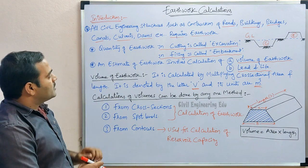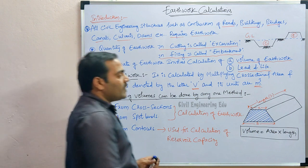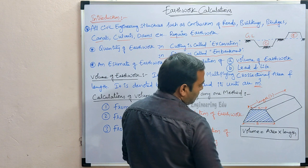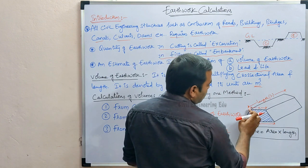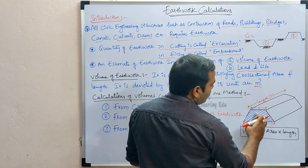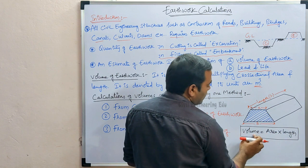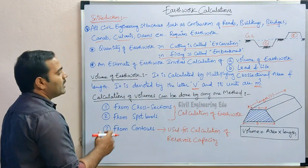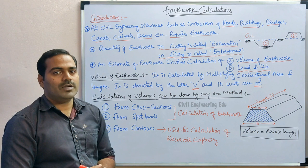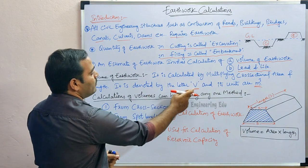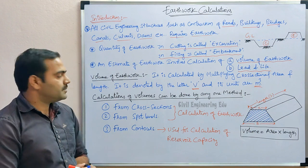Volume of earthwork is calculated by multiplying the cross-sectional area and the length. If you see this figure, this is a trapezoidal shape with a given length. We find the area of the hatched portion and multiply it by the length. The formula is: Volume = Area × Length. Volume is denoted by the letter V and its units are cubic meters, so earthwork is calculated in cubic meters.